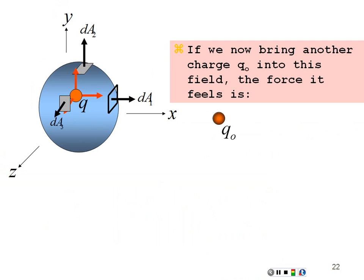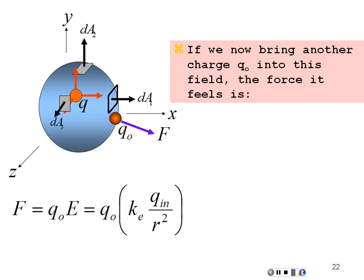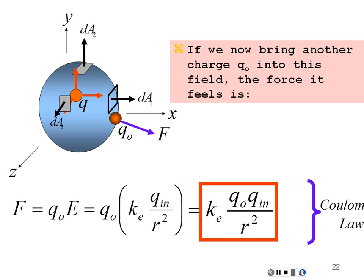Now if I bring in a second charge and put it on the surface of this sphere, it's going to feel a force equal to its charge times the field that exists there. That force equals q naught times E, which is q naught times kQ enclosed over r squared — the field at that radius from the first charge. This gives us k times q naught times Q enclosed over r squared. That is Coulomb's law — we have derived Coulomb's law from Gauss's law.